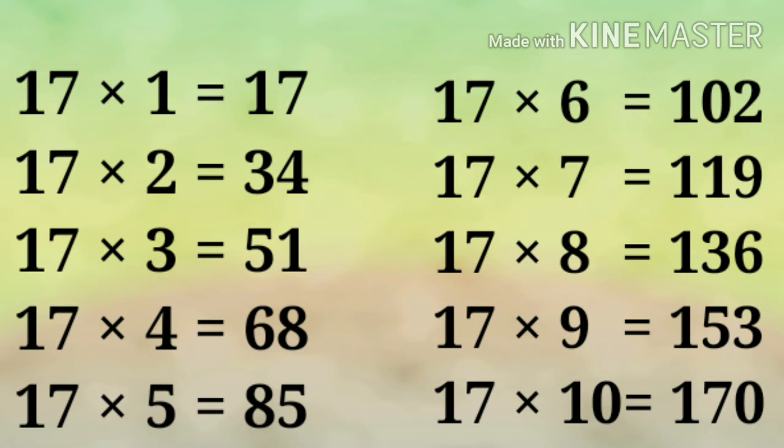17×3 = 51, 17×4 = 68, 17×5 = 85, 17×6 = 102, 17×7 = 119, 17×8 = 136, 17×9 = 153.